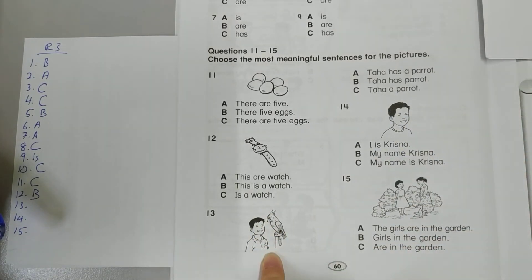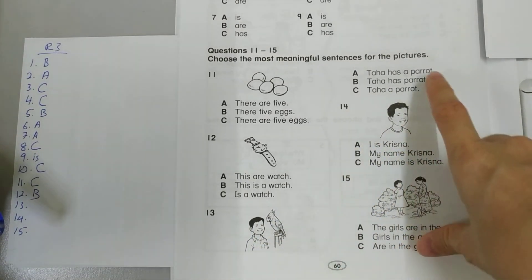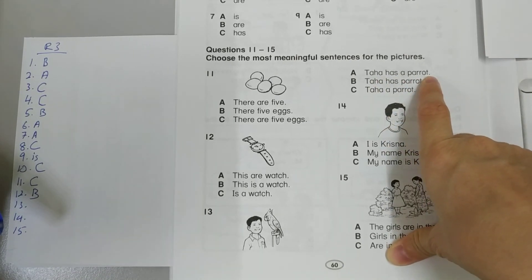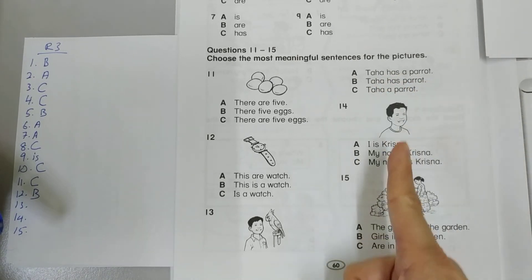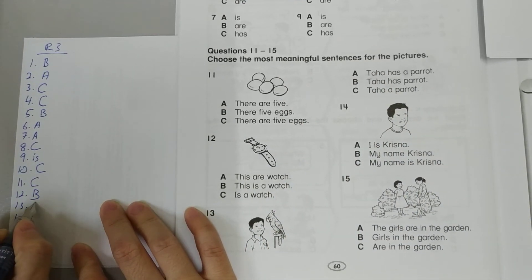Now let's see. 13. The picture is here. But the answers are up there. So Taha has a parrot. Very good. Has is for one. Taha is only one person. So number 13 is A.